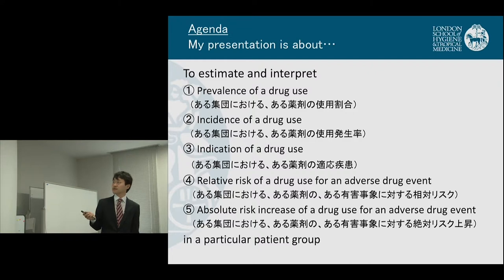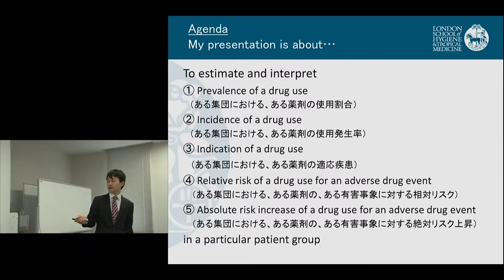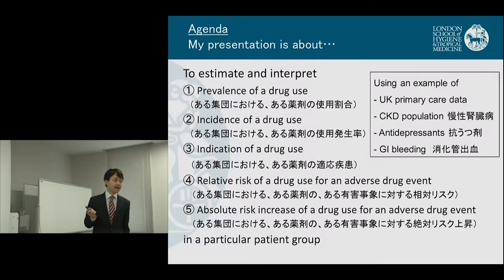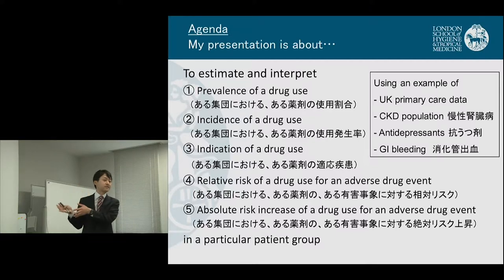My presentation is about estimating and interpreting prevalence of drug use, incidence, and indication in a particular group of patients. I will also be estimating the relative risk of a drug and the absolute risk increase, or excess risk, of a drug for an adverse drug event. Using my example of UK primary care data with a chronic kidney disease, or CKD, population, antidepressants, and gastrointestinal bleeding.